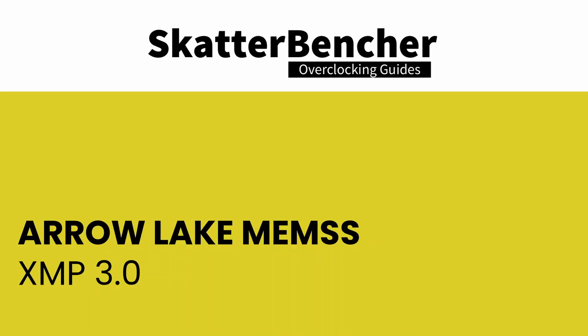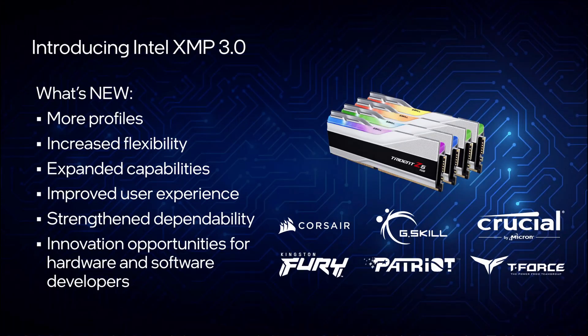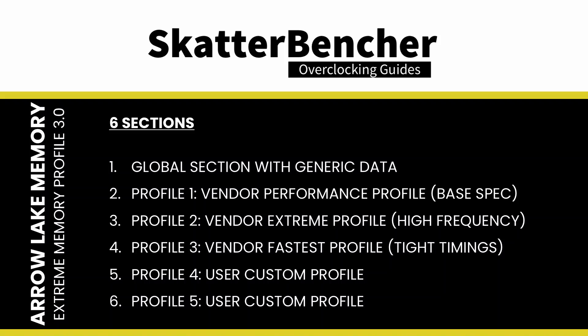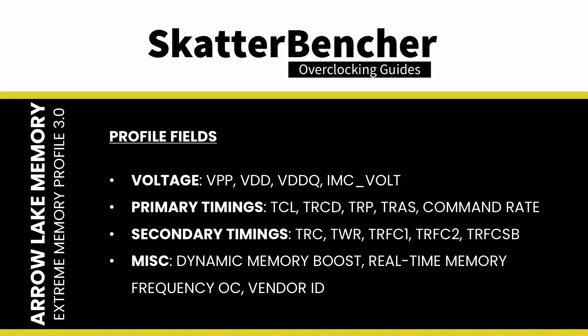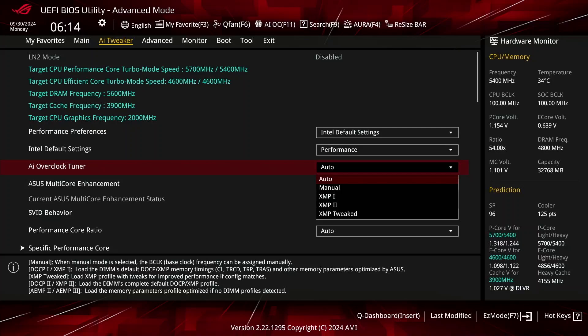Intel Extreme Memory Profile 3.0 is the new XMP standard for DDR5 memory and is the successor to XMP 2.0 for DDR4 memory. It was introduced together with the Alder Lake processors in 2021 and is largely based on the XMP 2.0 standard but has some additional functionality. The XMP 3.0 standard is designed with six sections: one global section describing generic data used across all profiles, and five other sections for five profiles respectively. Each profile has a wide range of configurable fields related to voltage, frequency, and memory timings. In the ASUS ROG BIOS you can access the XMP profiles in the AI Tweaker menu via the AI Overclock Tuner menu item.